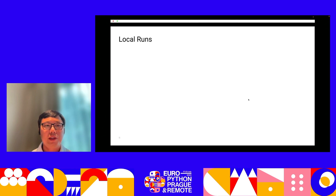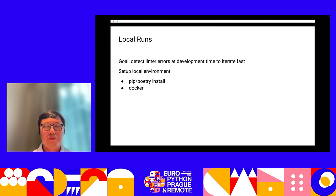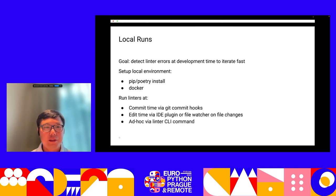Once we have the version and config in the codebase, we can run linters in the local environment where developers edit the code. The goal is to help developers detect linter errors early at development time and iterate fast. We can use a Python package management tool to install packages or pre-install them in a Docker image. We can also configure a git commit hook to automatically run linters at commit time, or integrate with the IDE through file watchers or a language server to monitor IDE events.